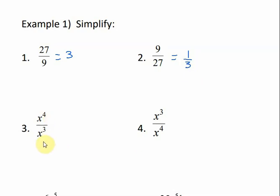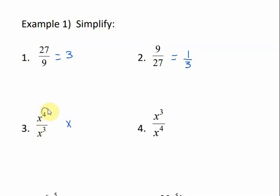Now, if we have variables with exponents and our bases are the same, if we're dividing, then we subtract the exponents, and we put our answer where the largest exponent is. Here we know we're going to have an x, and if I subtract 3 from 4, I get 1, and I put my answer on top in the numerator — it's x to the 1, or just x.